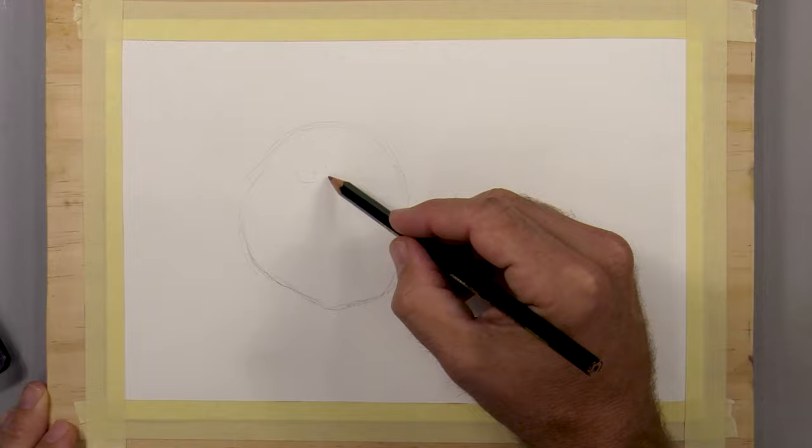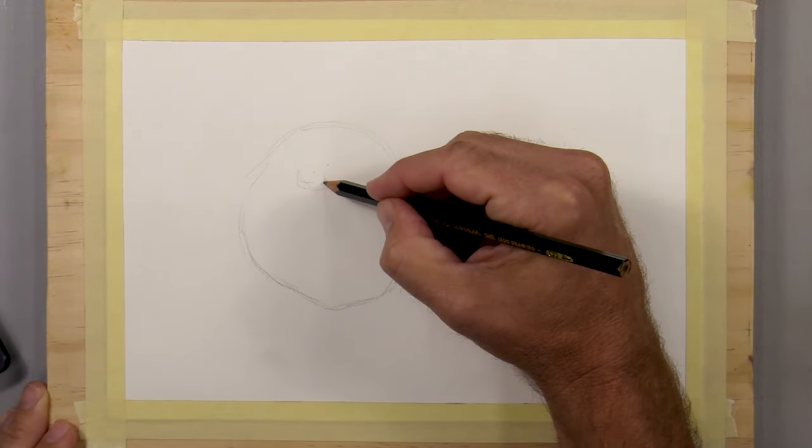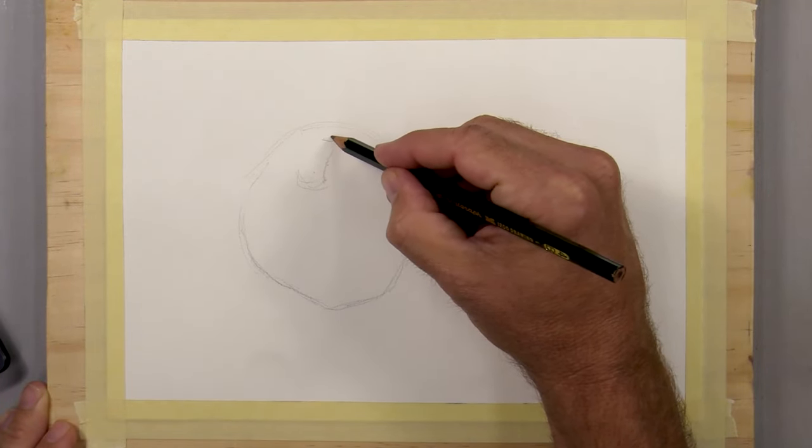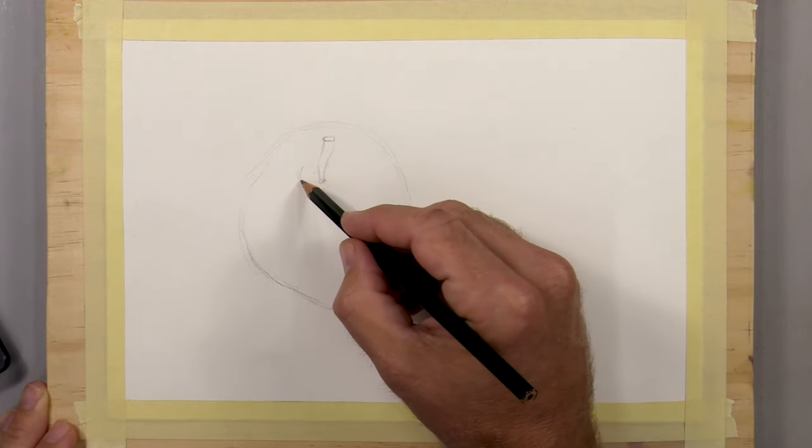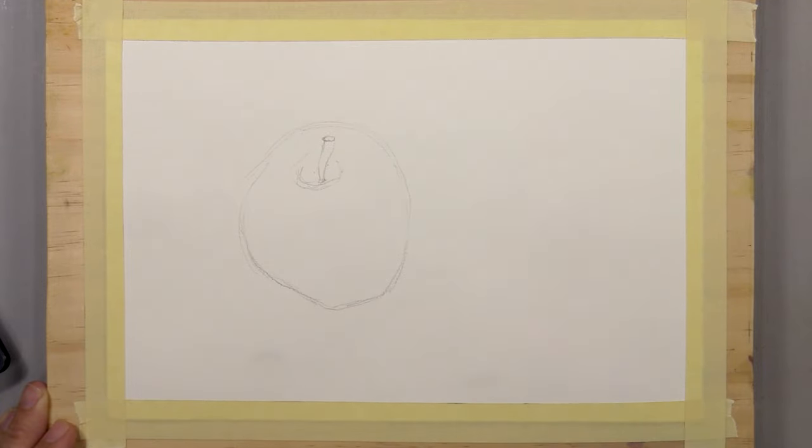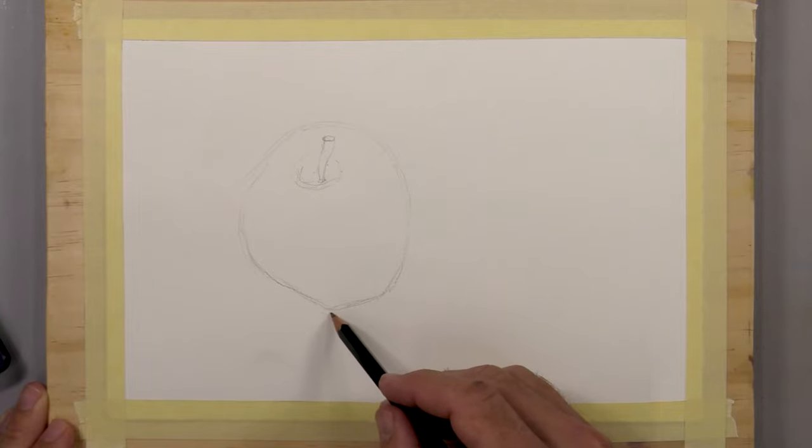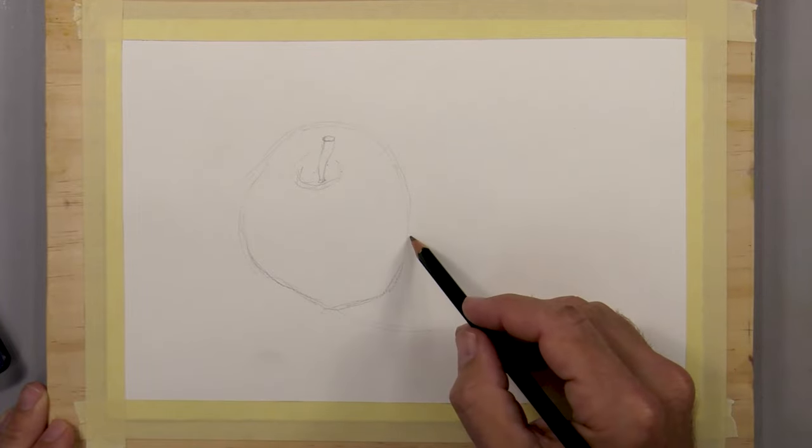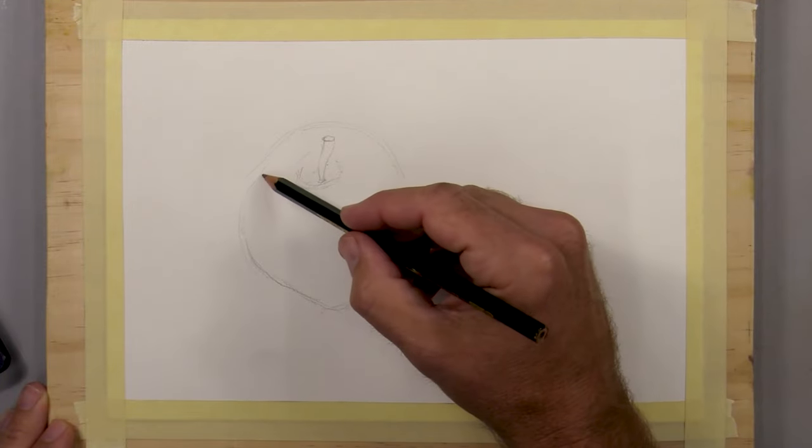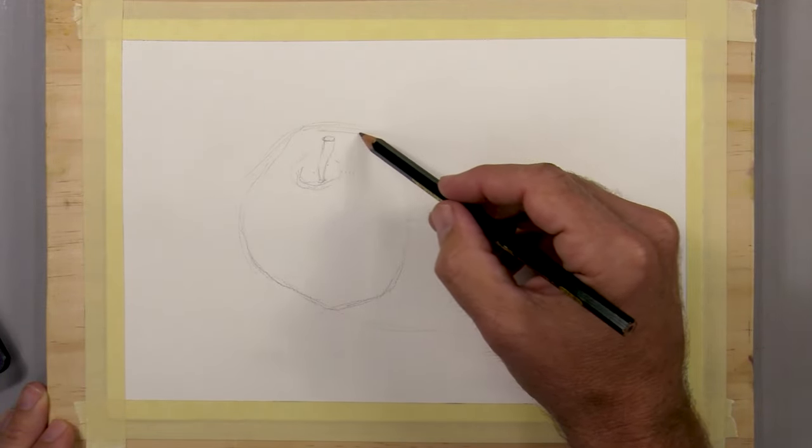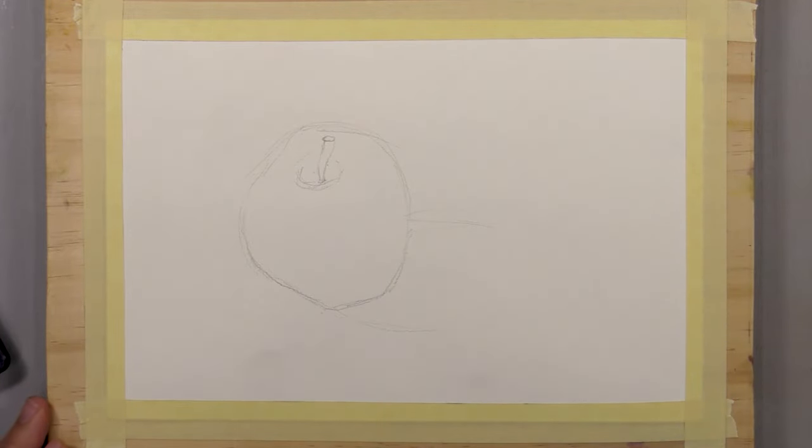Next, I lightly sketch in that dip where the stem of the apple is and add the stem. Then I indicate the edges of the cast shadow. I don't completely draw it in. I leave the outermost part of the cast shadow blank because I want to create a blend there and I don't want my pencil line to show up.